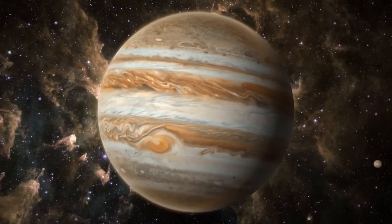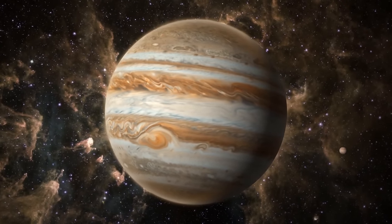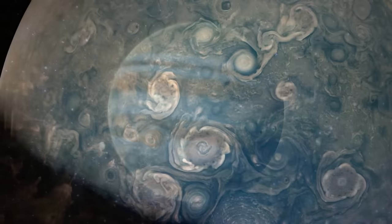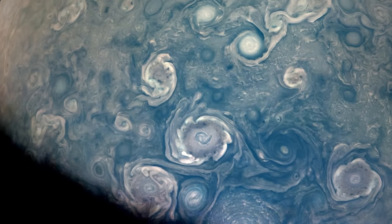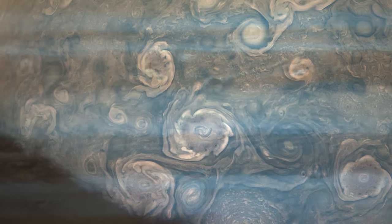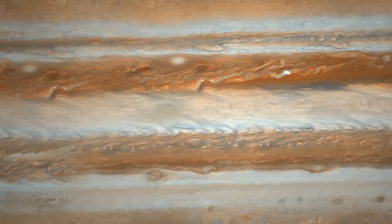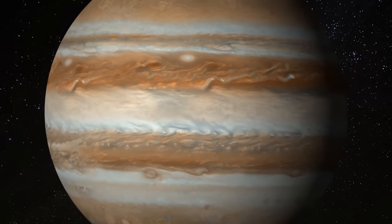Now, because Jupiter has such a massive atmosphere and a weather system similar to Earth's, it experiences some extraordinary storms. So even though these stripes may look calm and peaceful, they're actually part of a wild weather system. It's like a never-ending storm party happening there.